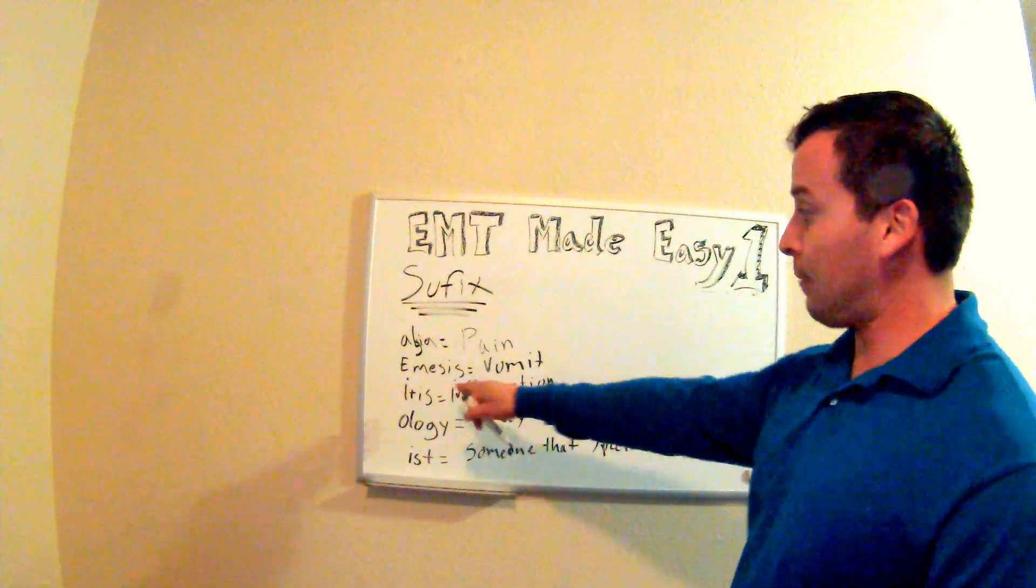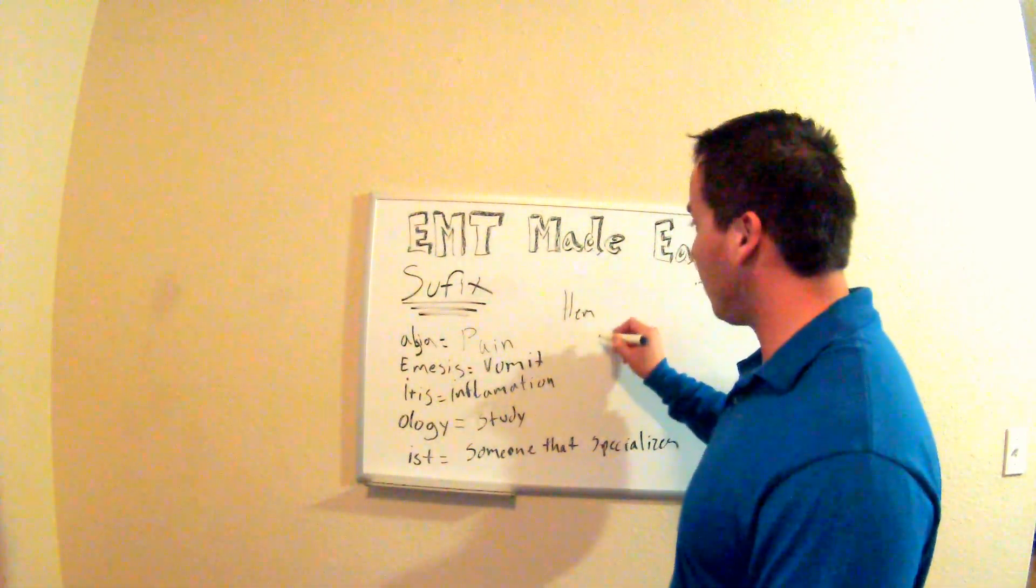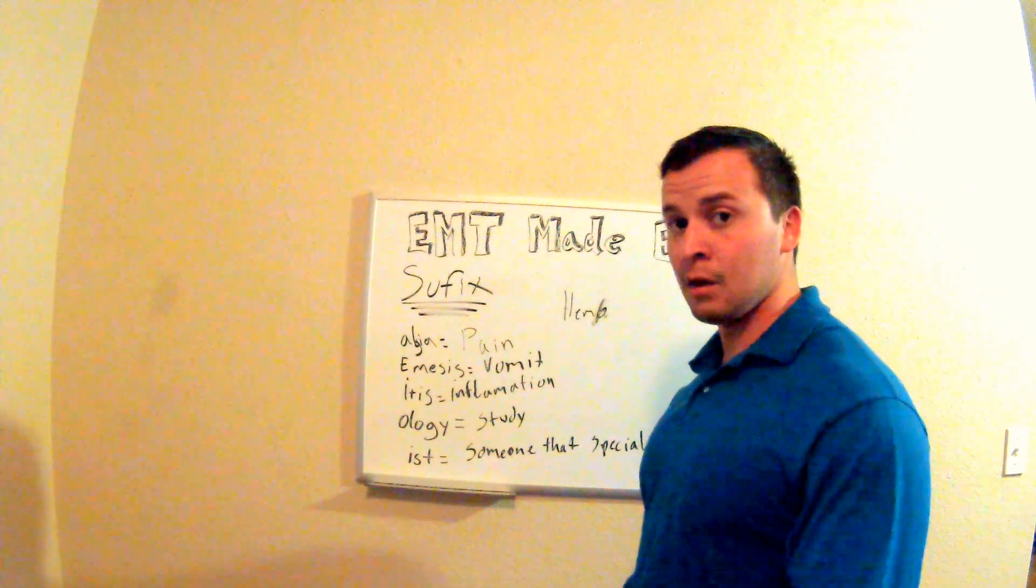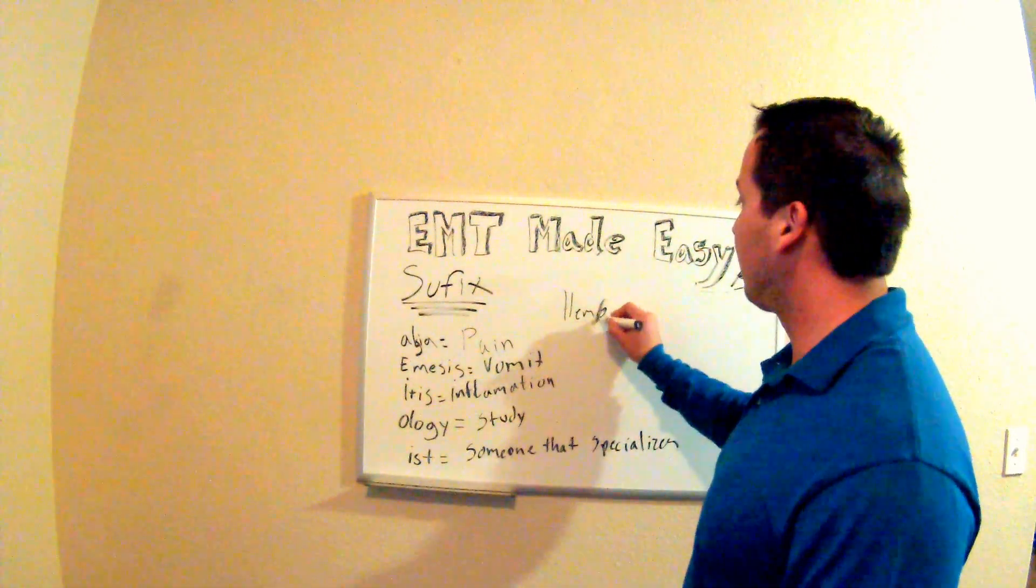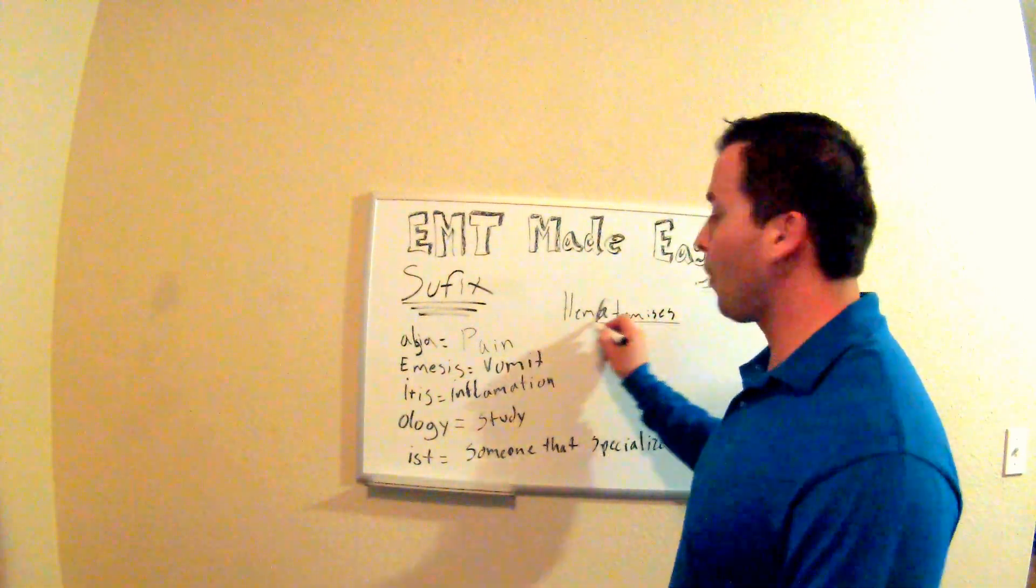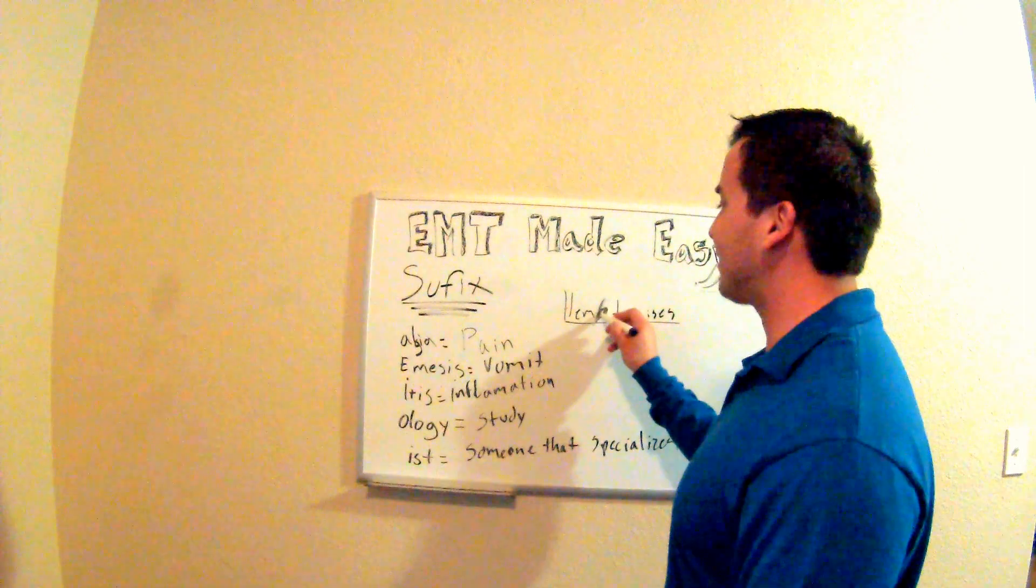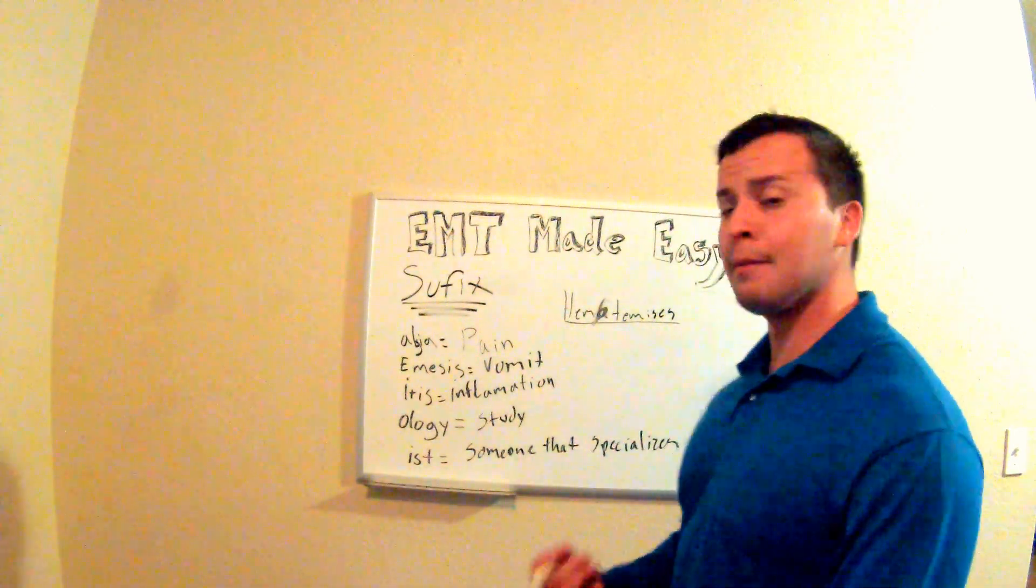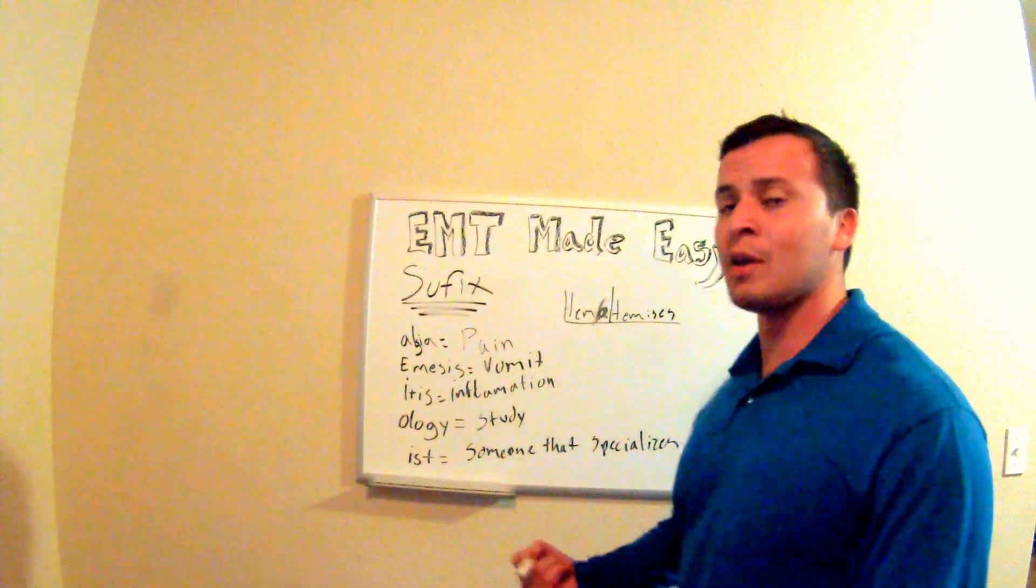Let's go with emesis first. Every time you see H-E-M with the A or with the O, it means blood. So hem means blood. Let's go ahead and put hematemesis, which means you're throwing out blood. I'm not sure if I'm pronouncing this exactly correctly, but hematemesis means blood.